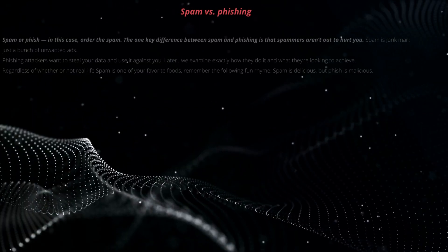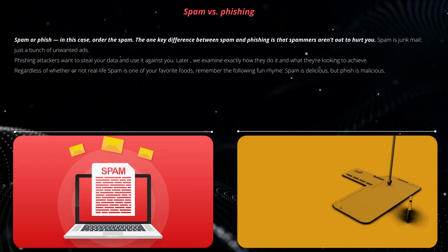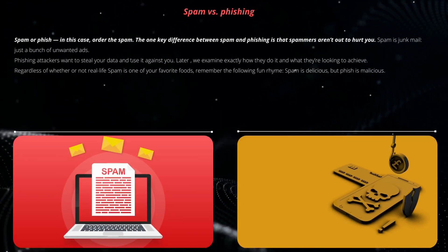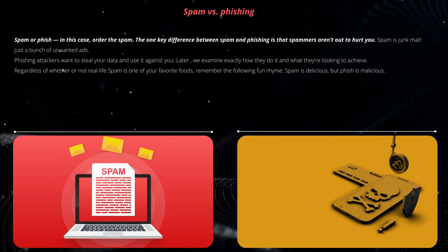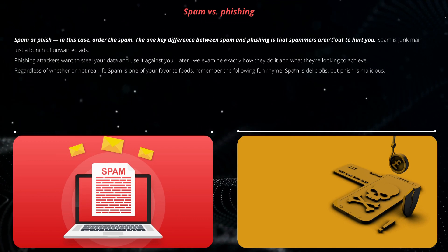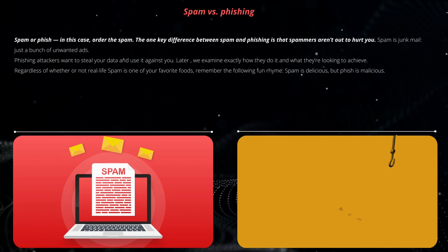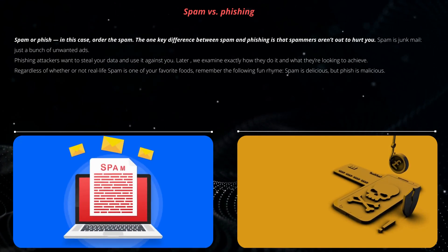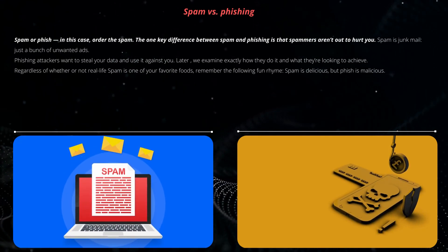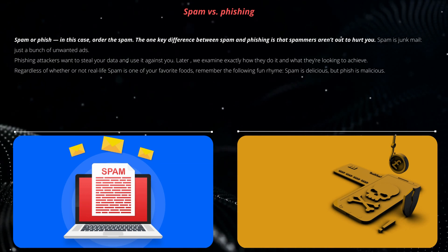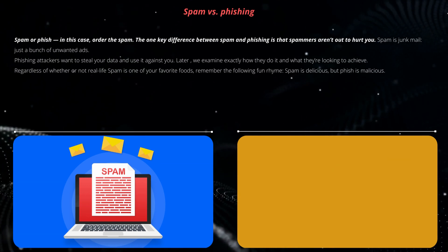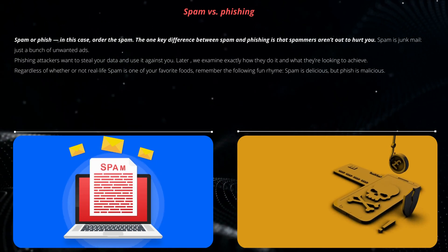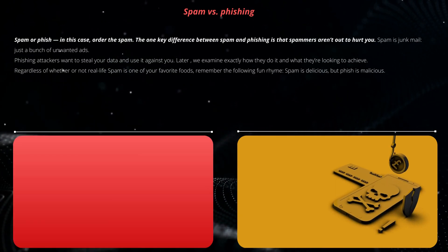Spam or phish? In this case, order the spam. The one key difference between spam and phishing is that spammers aren't out to hurt you. Spam is junk mail — just a bunch of unwanted ads. Phishing attackers want to steal your data and use it against you. Remember the following fun rhyme: spam is delicious, but phish is malicious.